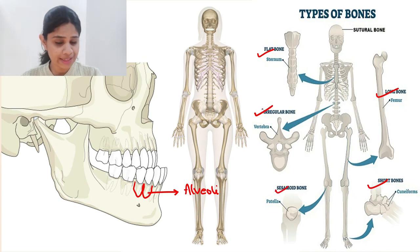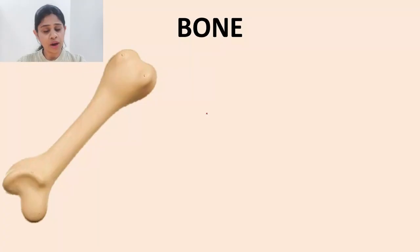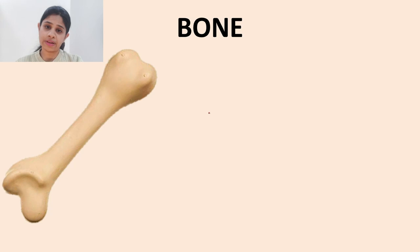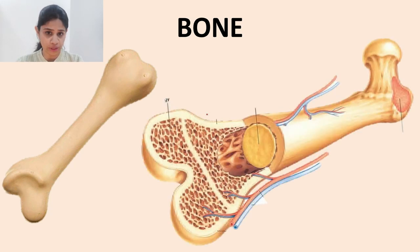The maxilla and mandible fall into the category of the irregular bony type. Now, be it any type of bone, histologically when we see a cross-section of the bony component, we see the following layers.